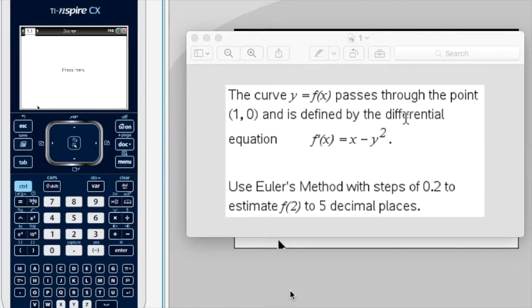This video is going through Euler's method for this problem here. So it says the curve y equals f(x) passes through the point (1, 0) and is defined by the differential equation f'(x) equals x minus y squared. Use Euler's method with a step of 0.2 to estimate f(2) to 5 decimal places.